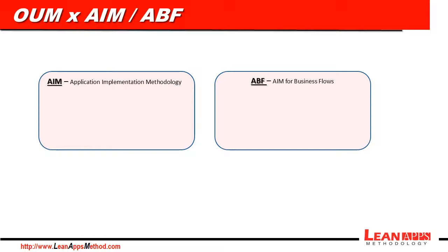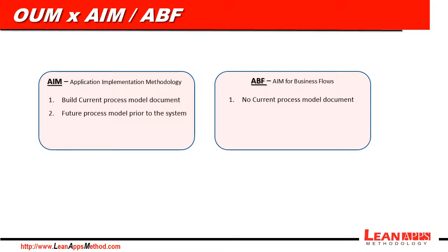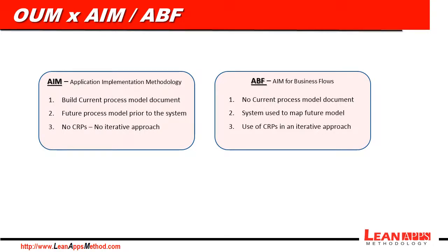Their main differences were: first, at AIM we had to build a current process model document, which we did not have at ABF, because that's a useless document after the project is completed. Second, at AIM we had to define a future process model prior to showing the system to the final users and configure it. But at ABF, the system was used to map the future process model with the users, along with the CRPs — the conference room pilots. Third, AIM did not use CRPs, but ABF used them in an iterative approach.